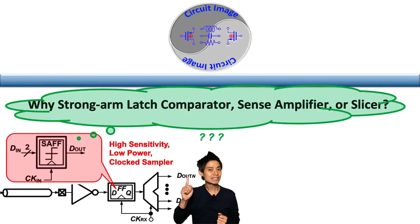Last time, we knew a high sensitivity and low power sampler is a match for high-speed service.